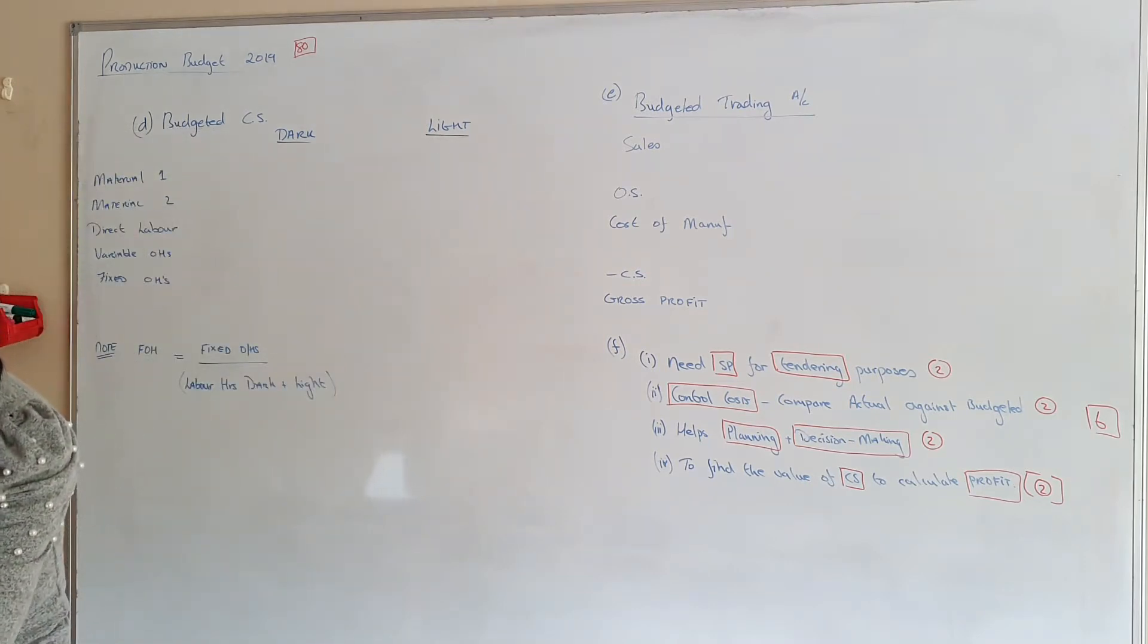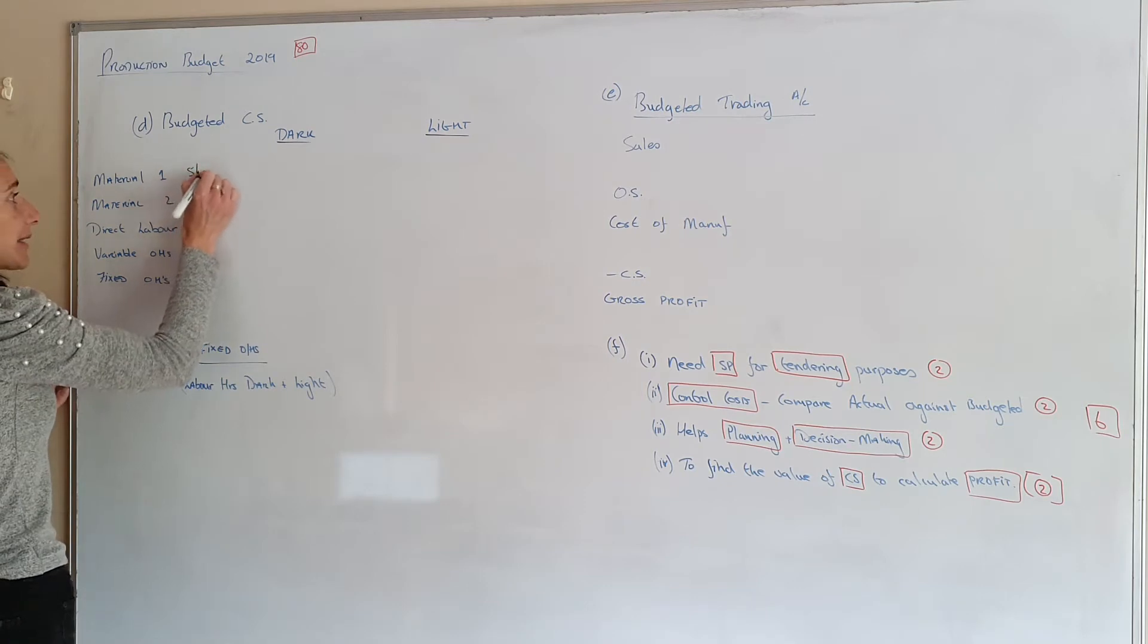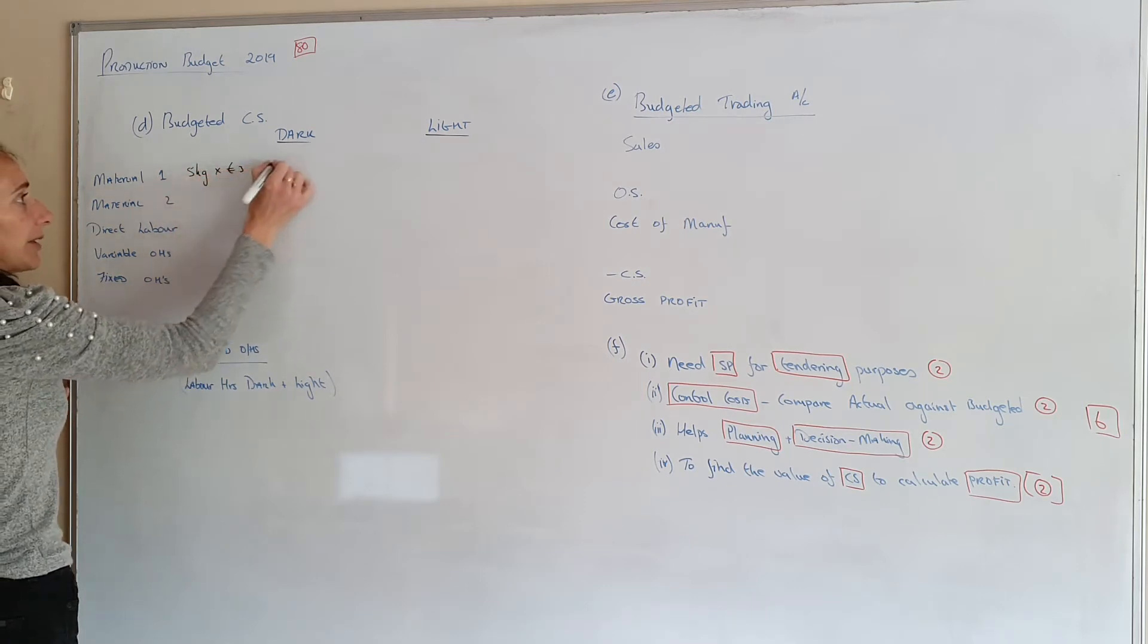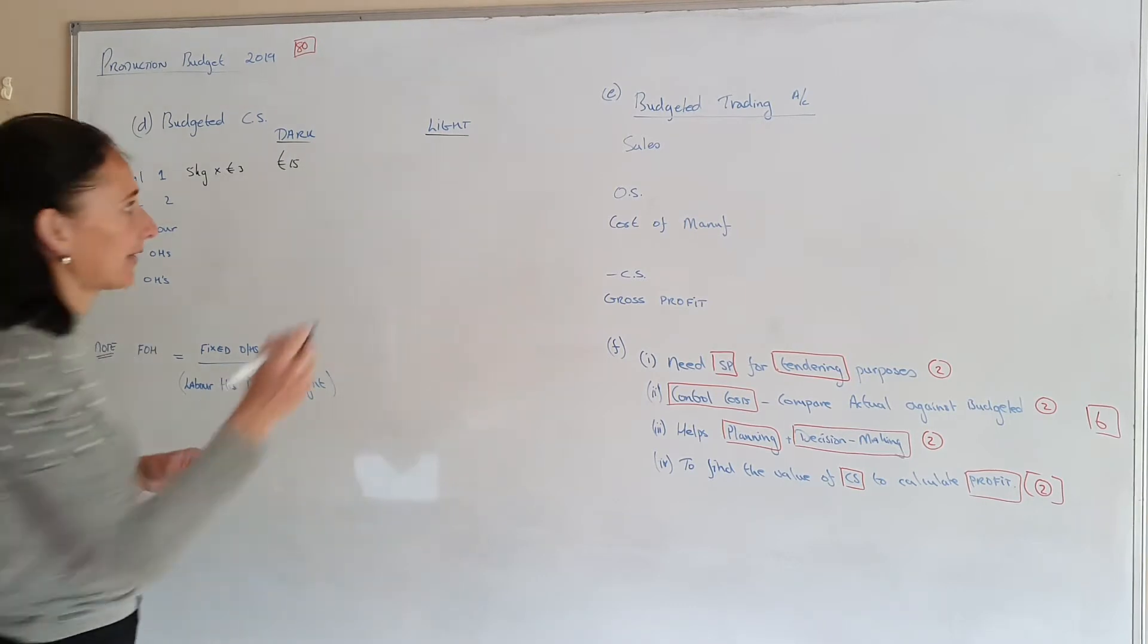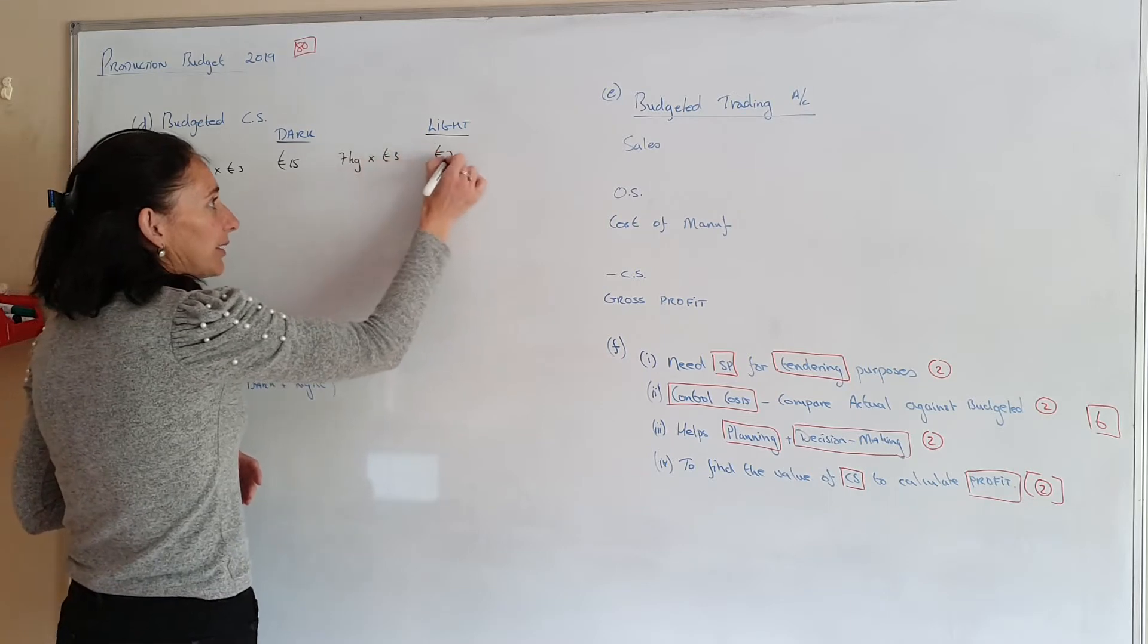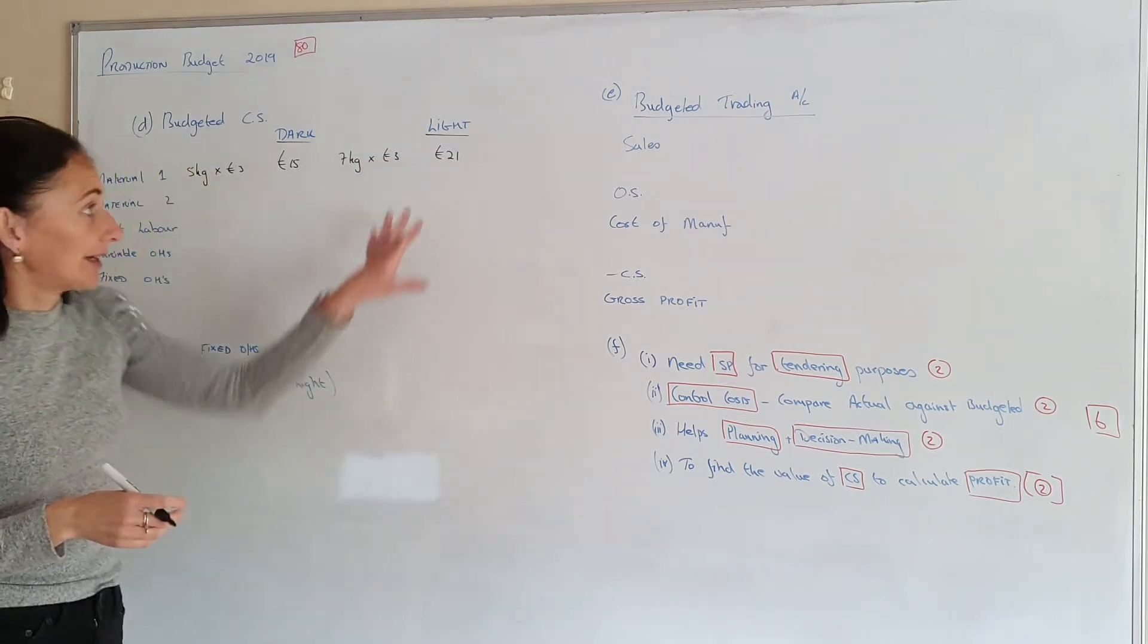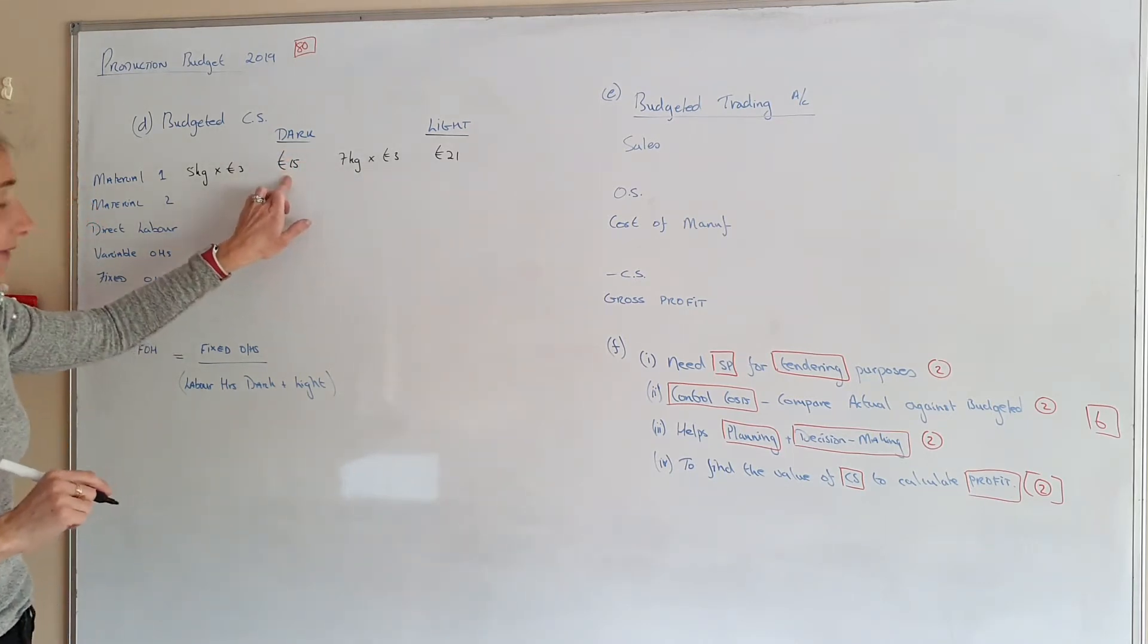If you look at the question, dark needs 5kg of this and it costs €3. So that's €15 for material one. Light uses 7kg of material one and it costs €3. So the material one for light will cost €21 for one unit and for dark will cost €15.